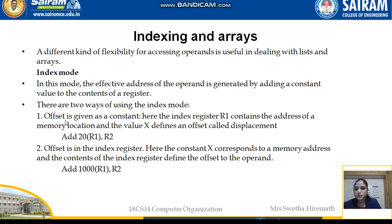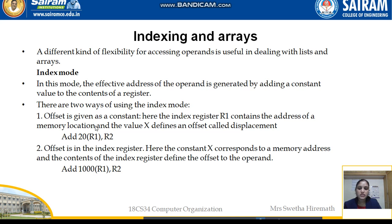In the first type, the offset is given as a constant. The index register R1 contains a memory address, and the value X defines an offset called displacement. For example, ADD 20(R1), R2 — the value 20 is added to the address in R1 to form the effective address. The element at that address is fetched and added to R2, with the result stored in R2.